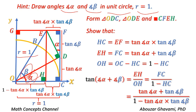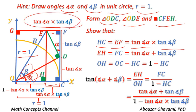Form right triangles ODC and ODE. Also form rectangle CFEH. Show that the length of segment HC equals to tangent of angle alpha times tangent of angle beta.